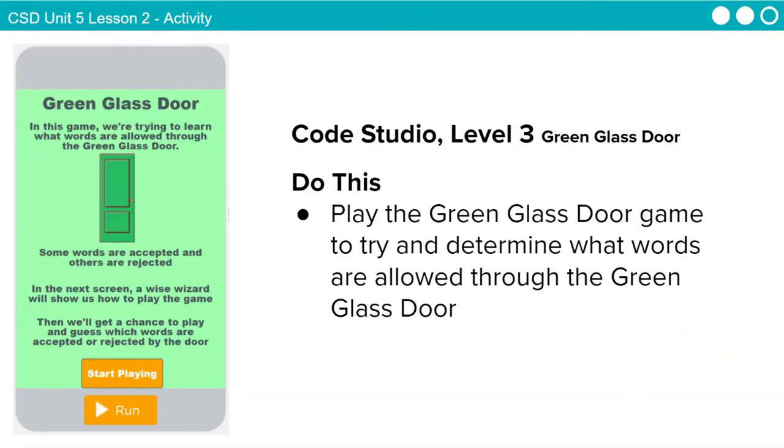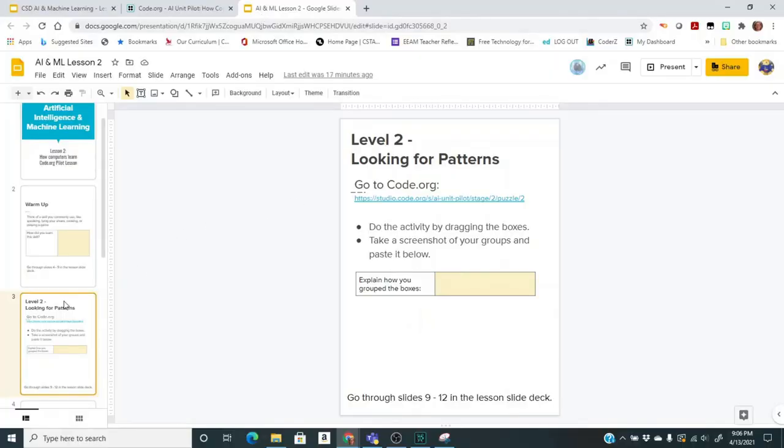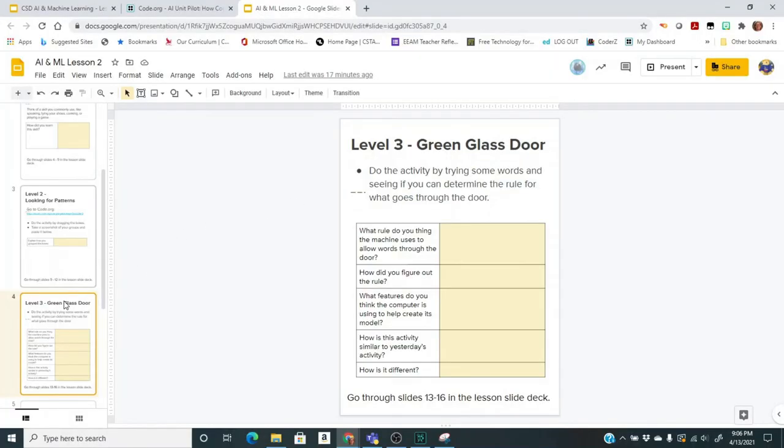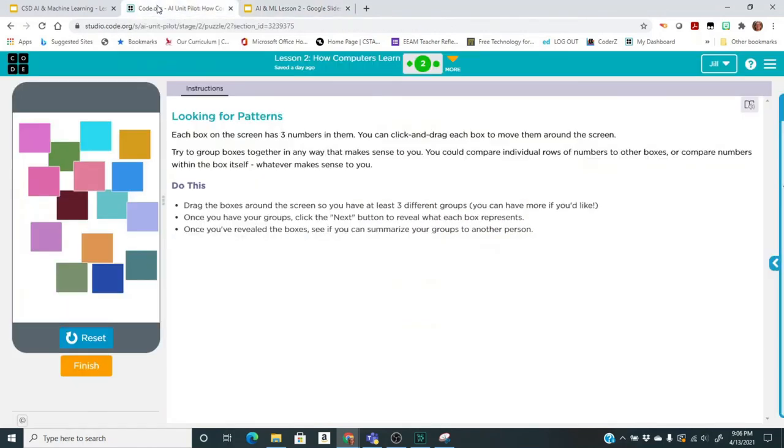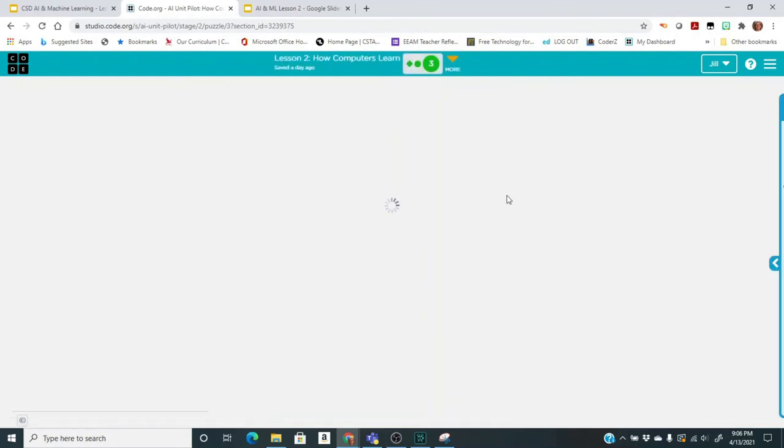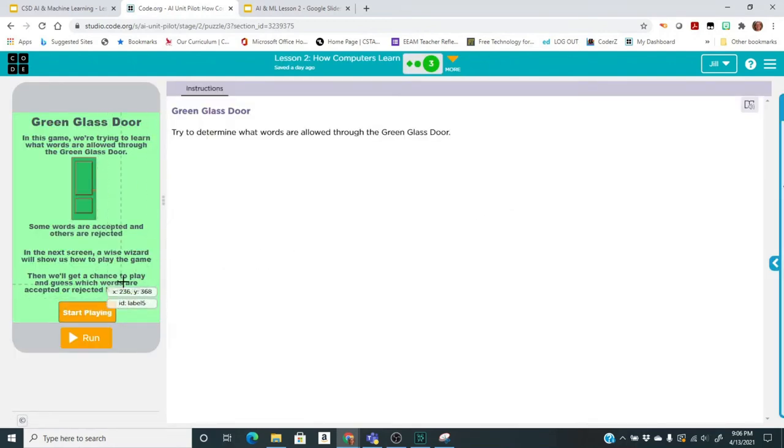When you get there, you're going to play the green glass door game to try and determine what words are allowed through the green glass door. On your document, you're going to go to the next slide and you're going to see there's five things to answer. Well, right now, you're only going to worry about the first two. So we're going to see what the game looks like and then you're going to answer these first two questions and then we will discuss. I'm going to go to the next bubble. We're here at the green glass door and it says try to determine what words are allowed through the green glass door. So I'm going to click run.